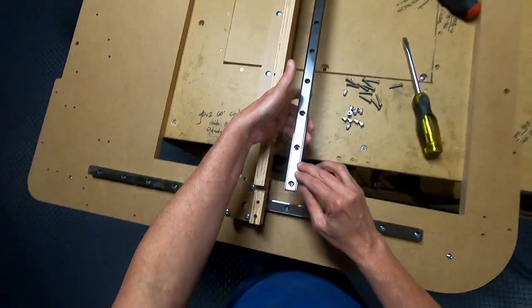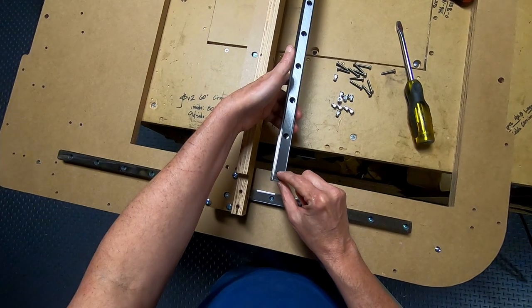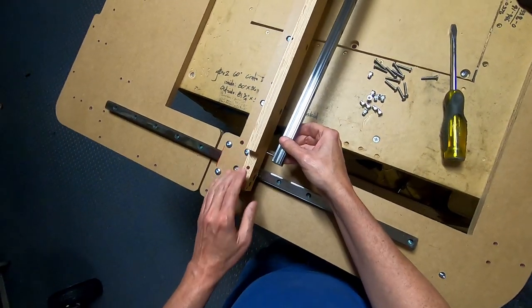Make sure that you have the rail oriented where the hole closest to the edge is on this side of the gantry.